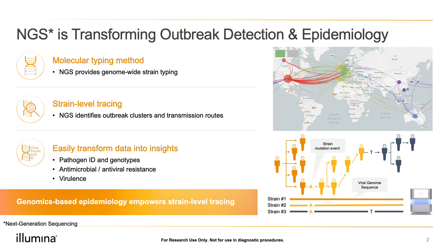Another awesome benefit of NGS is that you can sequence a mix of samples that contain viruses, but also contain other microorganisms. With this, you can identify bacterial species and viral species and fungi all at once. We will discuss some great methods to do this later in the session.